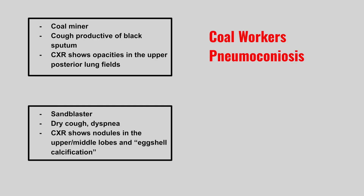Now we have a coal miner with a cough productive of black sputum. A chest x-ray shows opacities in the upper posterior lung fields. This is coal workers' pneumoconiosis.